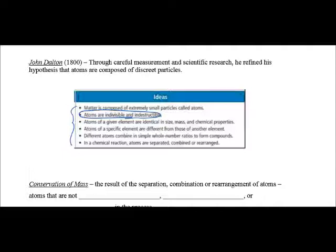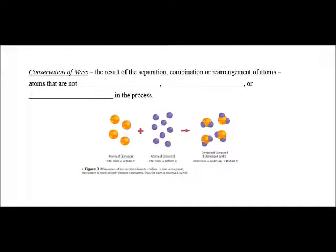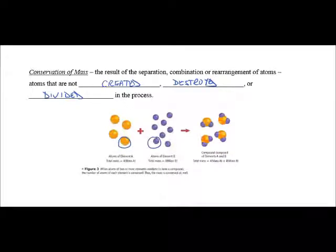One of the things that got him to realize the existence of Atoms was conservation of mass, the result of the separation or recombination of Atoms. That's stated as Atoms cannot be created, destroyed, or divided. So in simplest terms, if we have element A and element B, they will combine to form a compound where all of A and all of B will be used up.